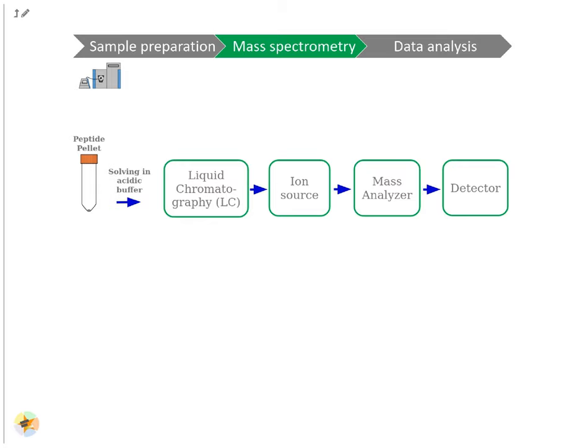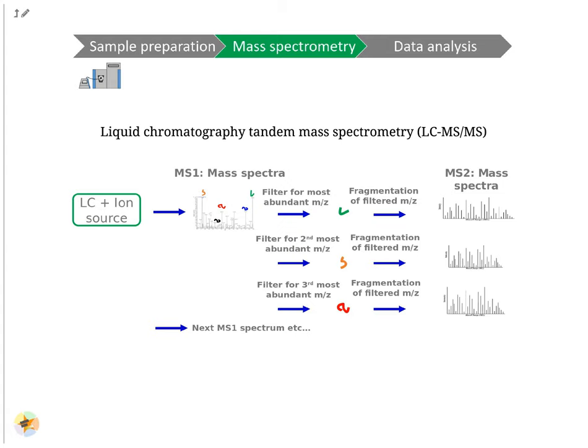Inside the mass spectrometer, the mass analyzer separates peptides based on their mass-to-charge ratio. The detector detects the peptide ions. Typically, explorative proteomics is performed via liquid chromatography tandem mass spectrometry (LC-MS/MS). While the sample elutes from the LC column, thousands of mass spectra are acquired. First, a mass spectrum of all peptides at each time point is measured. These mass spectra are called MS1 spectra.